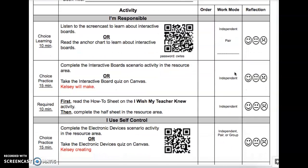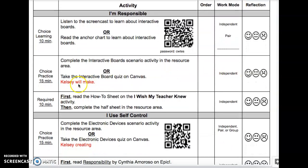The next thing on the I'm Responsible section of the activity list is a choice practice. It's 15 minutes. That should be completed after you do the learning. Learning is always going to be first and then you do the practice. They go together. They're about the same thing. So it's complete the interactive board scenario activity in the resource area or you can take the interactive board quiz on Canvas. Then this needs to be completed independently.